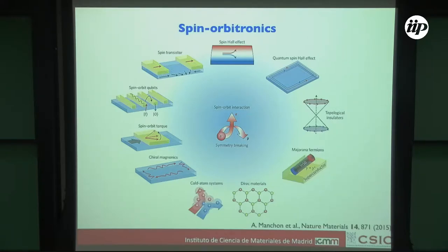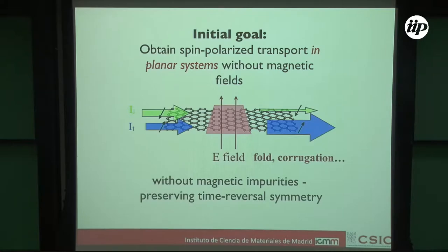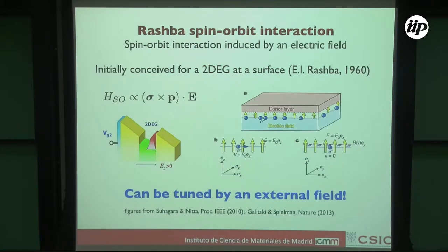Our initial goal was to see if it is possible to obtain spin-polarized transport in planar systems. The idea is: you have a planar material, put an electric field perpendicular to it, send in some unpolarized current, and it comes out polarized. Later we became interested in non-planar systems like folds and corrugations produced by deforming these structures. Importantly, we do not want to use magnetic fields — they are not suitable for the nanoscale — nor magnetic impurities, so we preserve time-reversal symmetry. One advantage is that with a double gate you can tune this effect, pointing toward a device-oriented application.